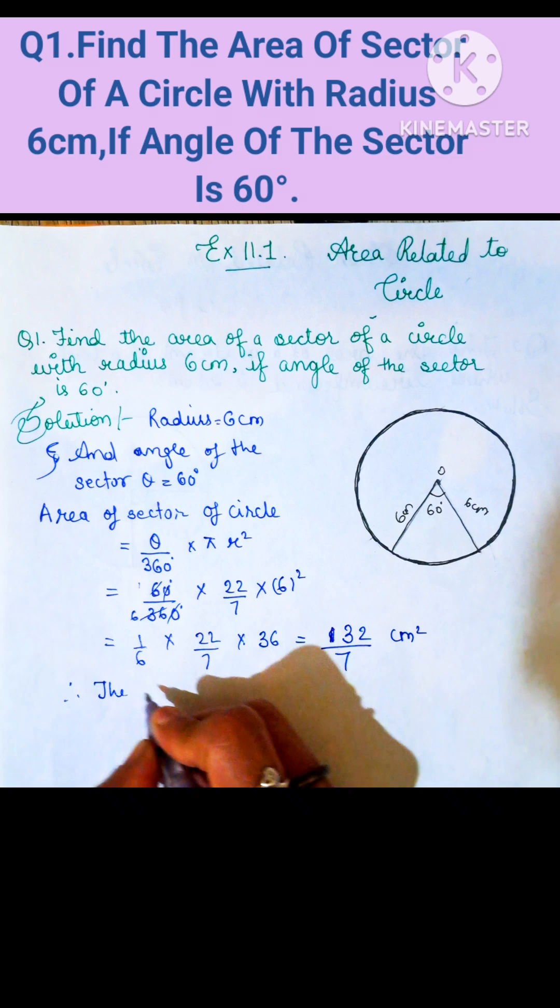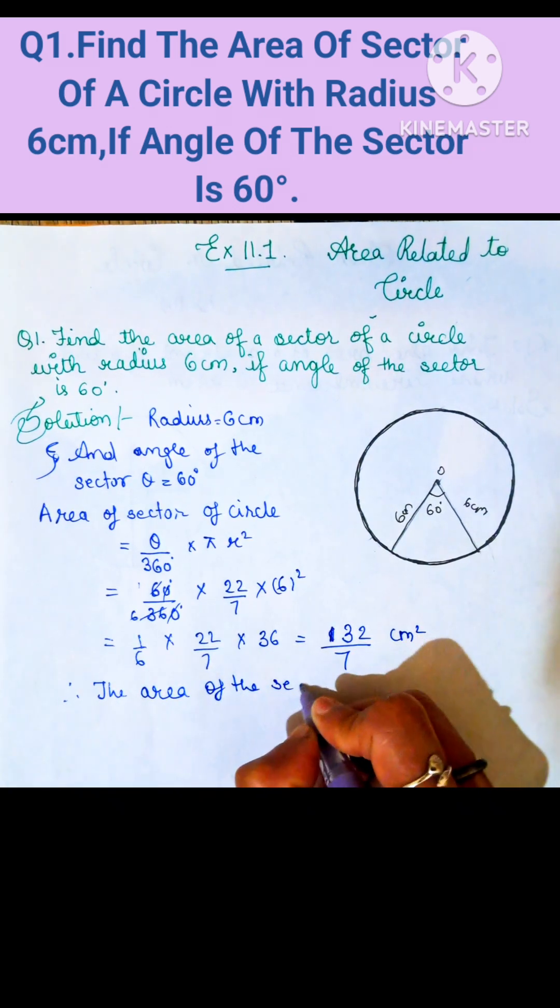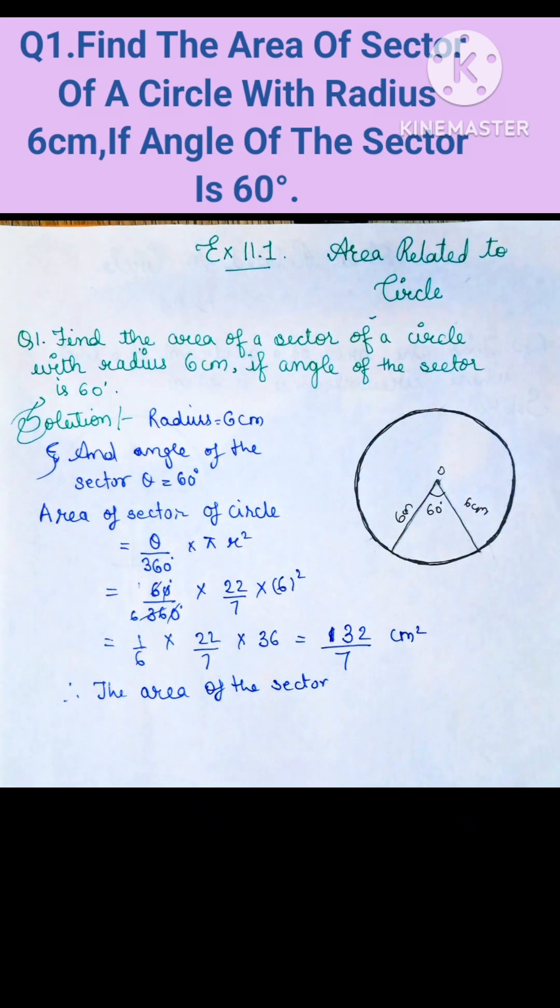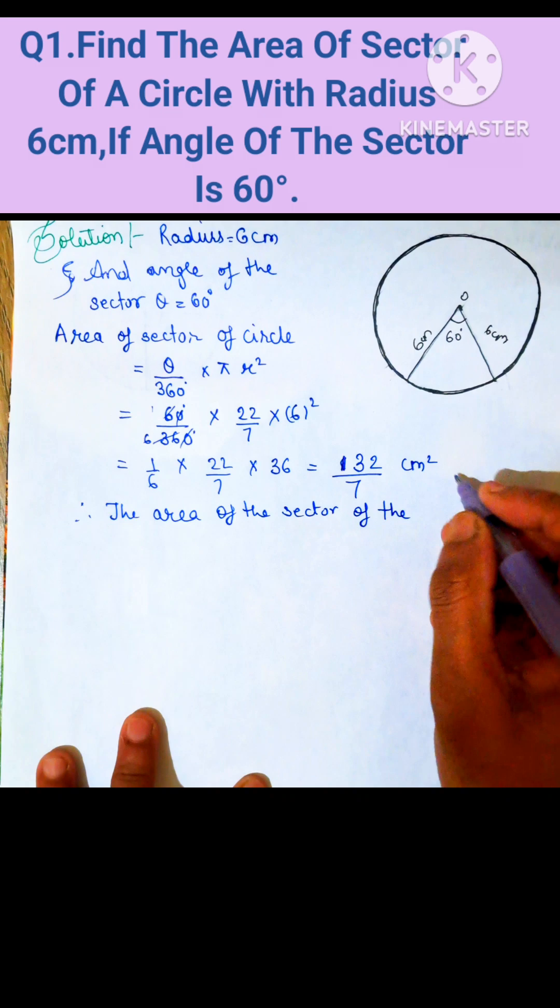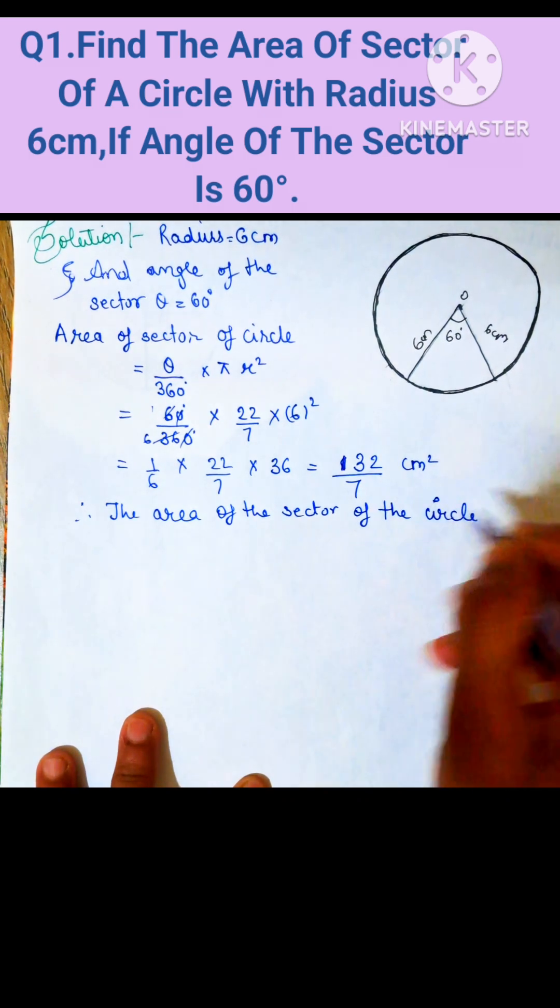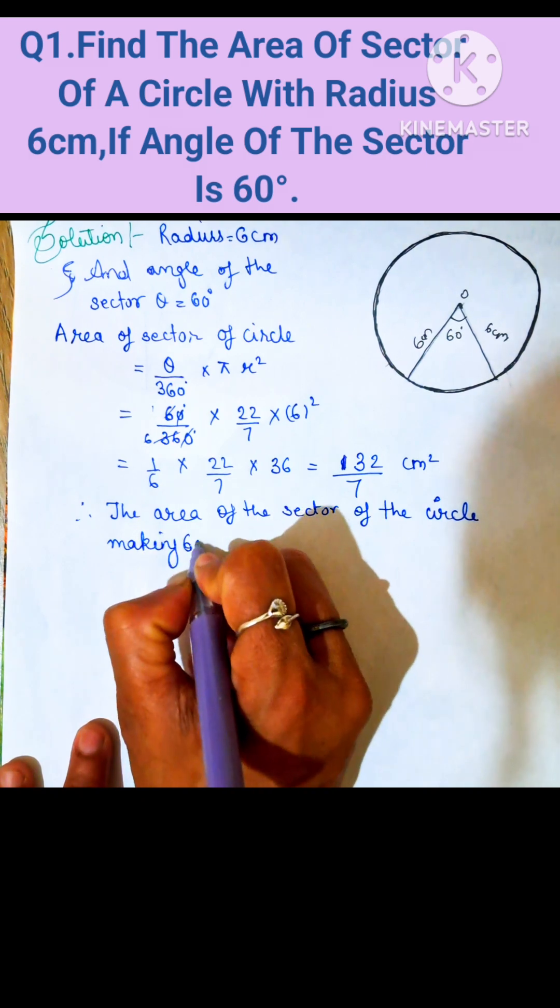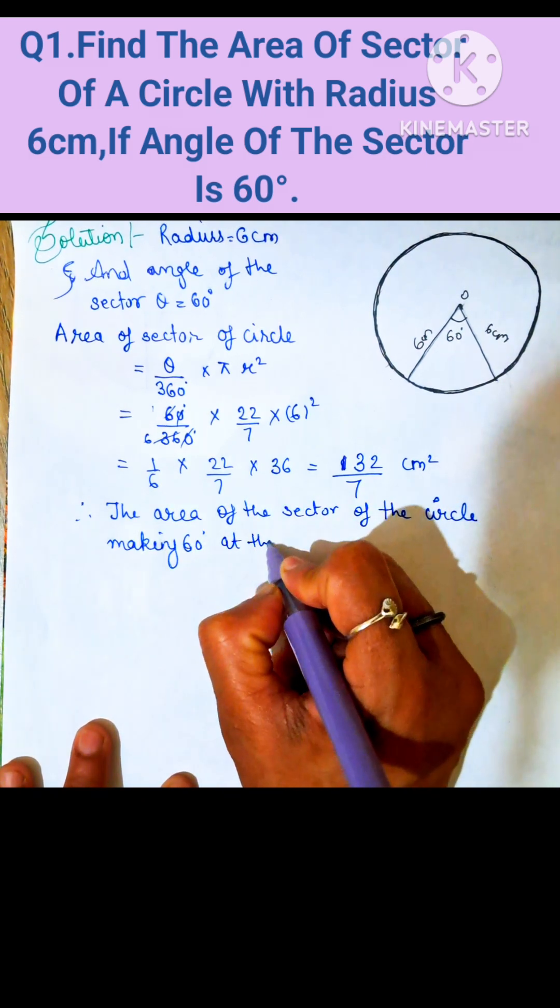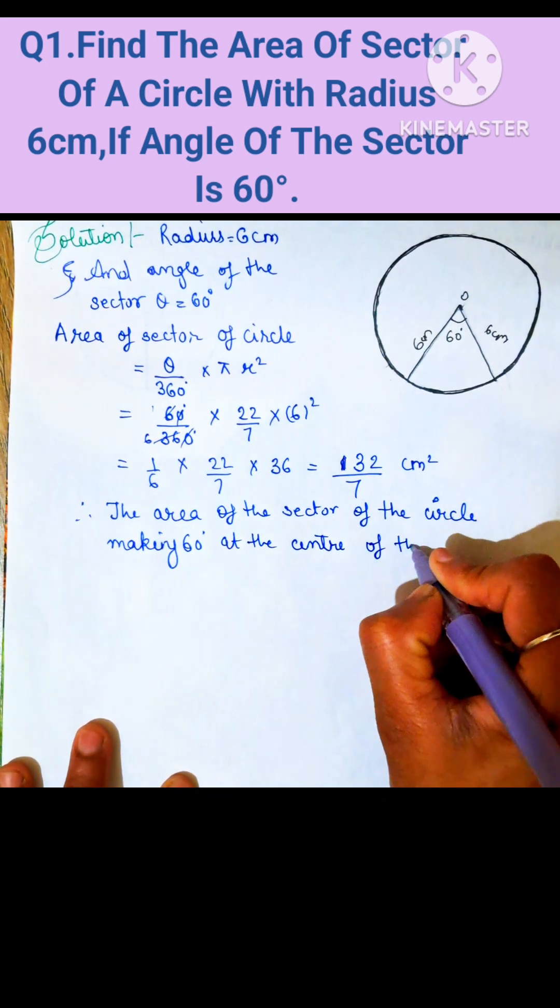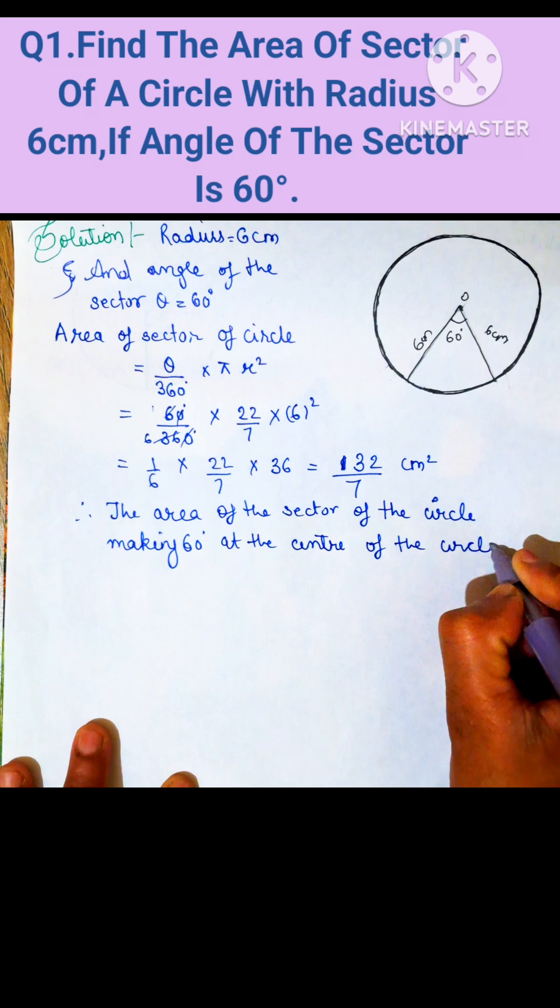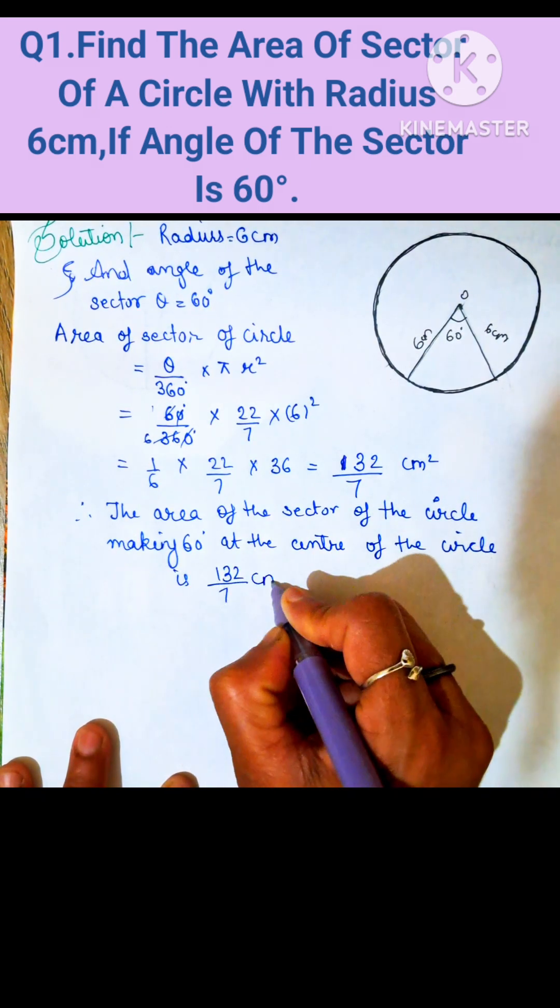So, the area of the sector of the circle making a 60-degree angle at the center of the circle is 132 divided by 7 cm square.